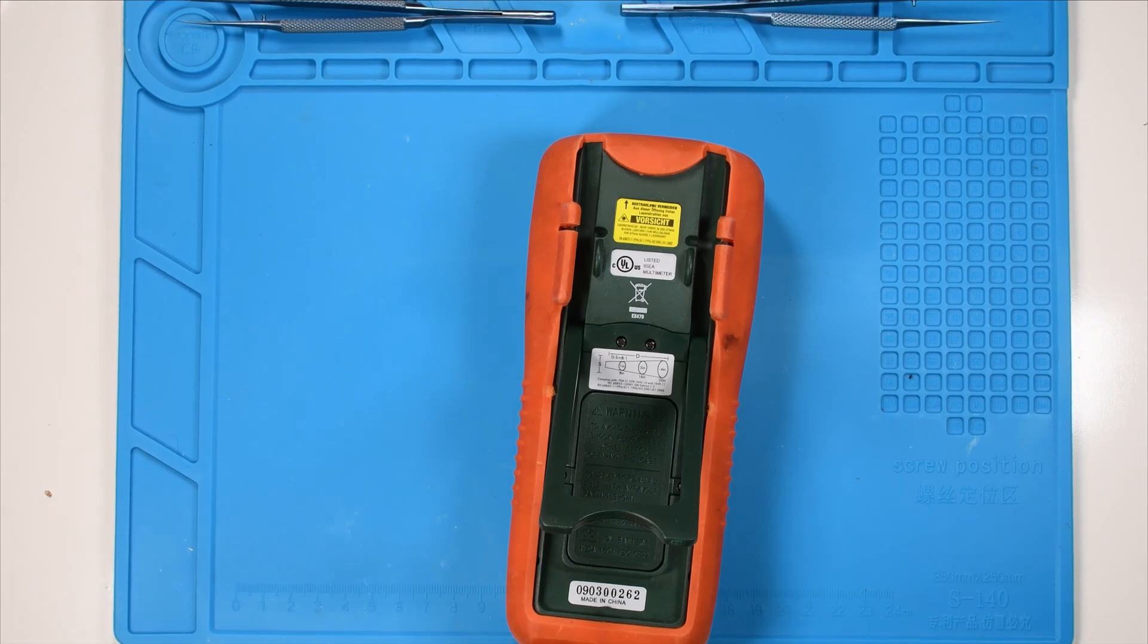With most multimeters, the battery is usually on the back. I have to loosen the two screws, and then I can remove the cover.